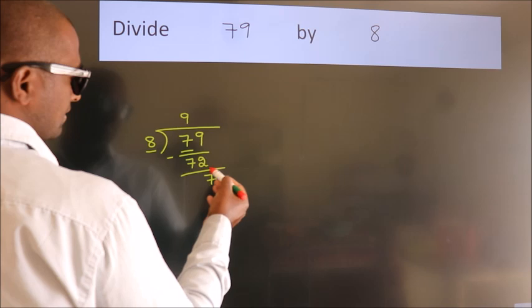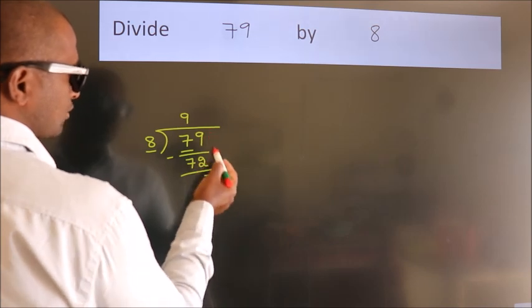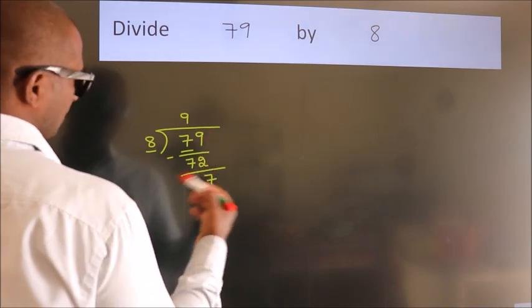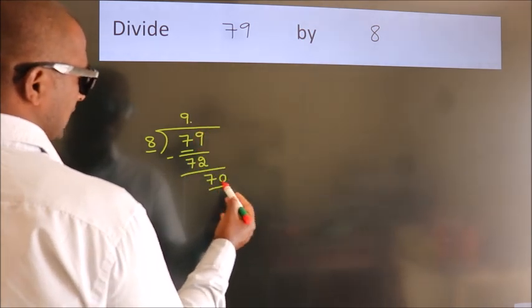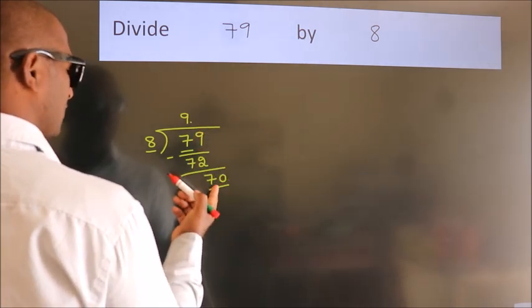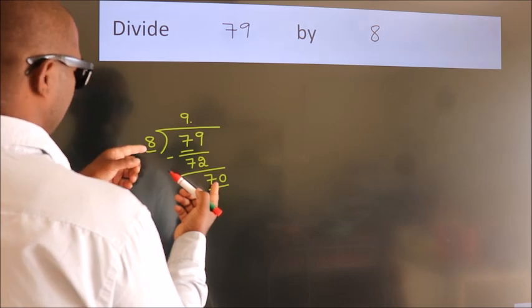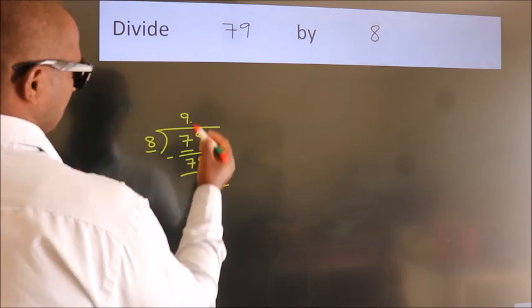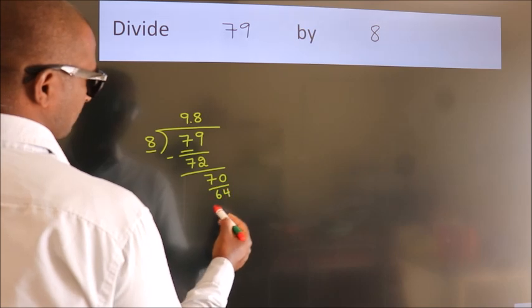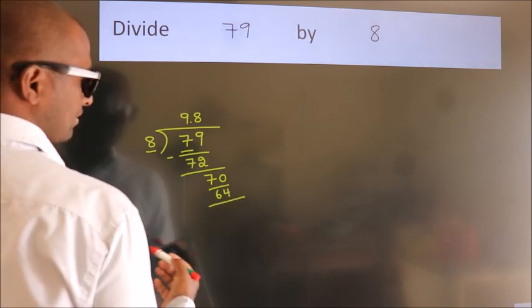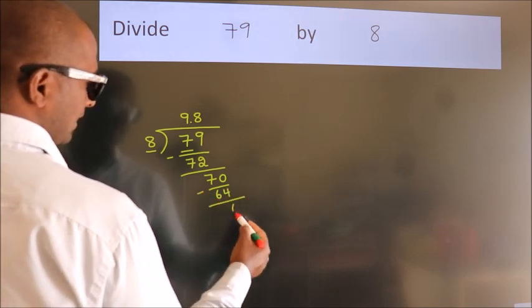After this, there are no more numbers to bring down. So what we do is put a dot and take 0. So 70. A number close to 70 in the 8 table is 8 eights, 64. Now we subtract and get 6.